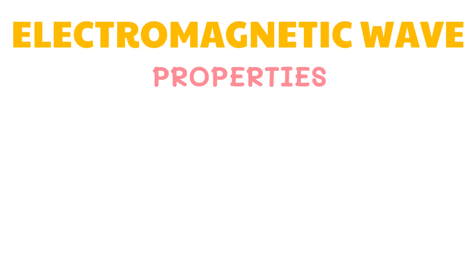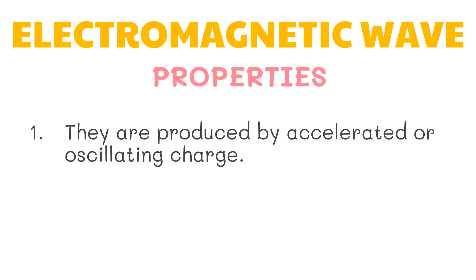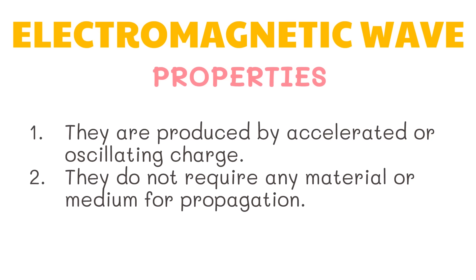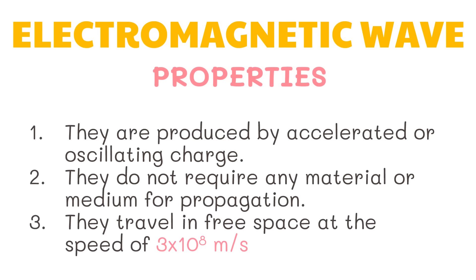Electromagnetic waves are known to possess the following properties. 1. They are produced by accelerated or oscillating charge. 2. They do not require any material or medium for propagation. 3. They travel in free space at the speed of 3 times 10 raised to the 8th power meters per second.